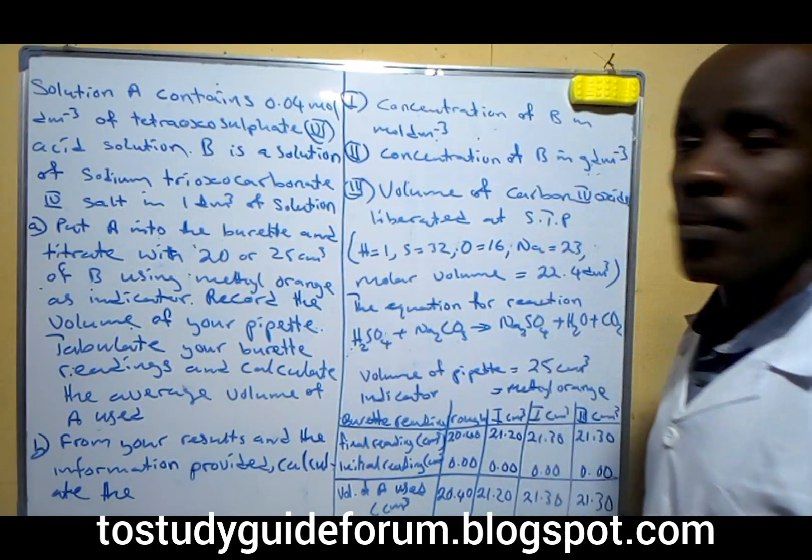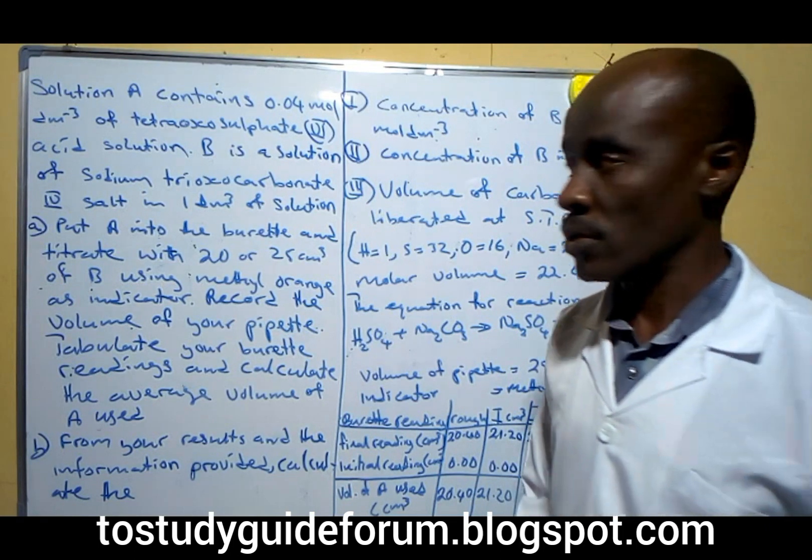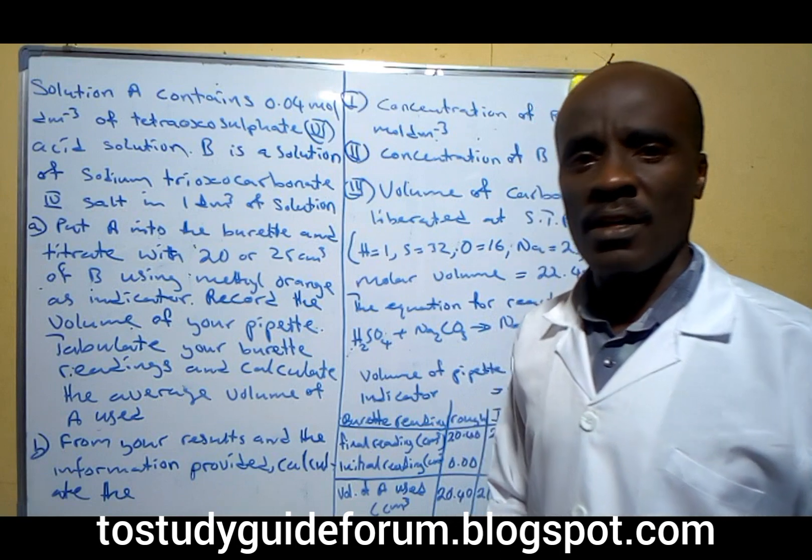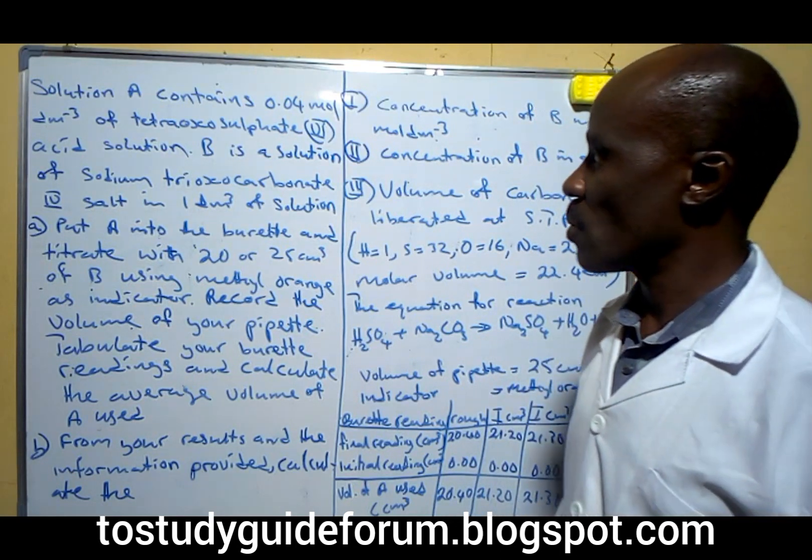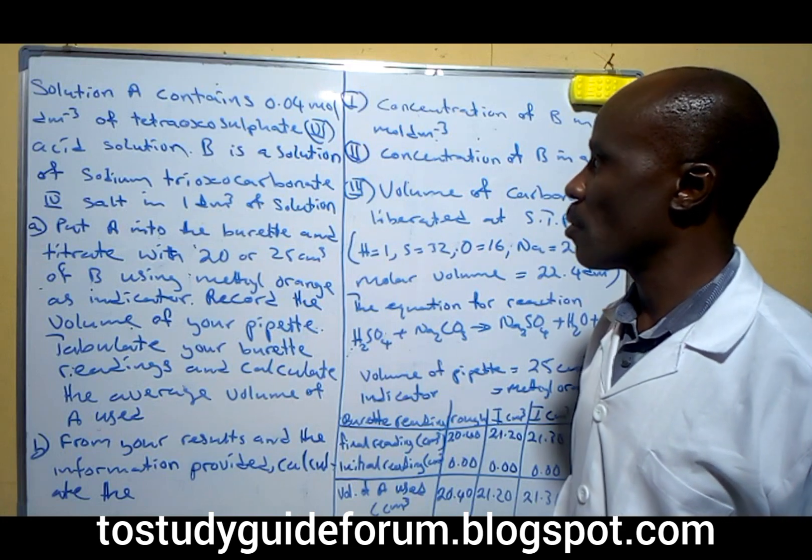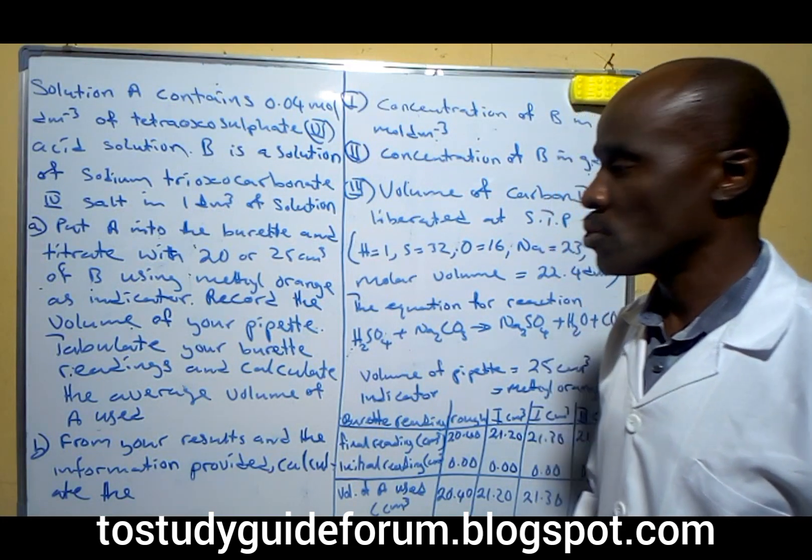Today we will be looking at a possible NECO question in volumetric analysis. We have here a question where solution A contains 0.04 moles per dm³ of a dibasic acid solution.